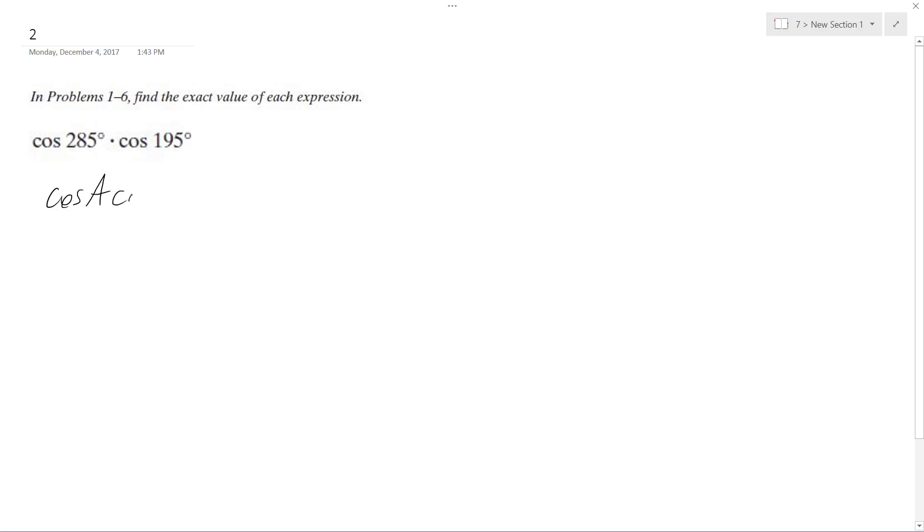The same thing as cosine A, well this is the same setup. Cosine A cosine B is equal to one half of cosine of A minus B plus cosine of A plus B.